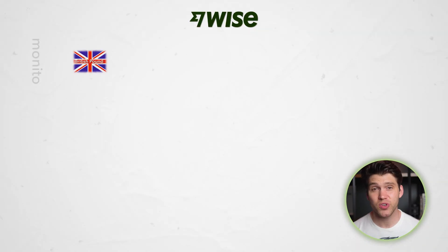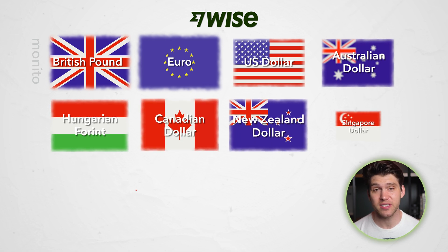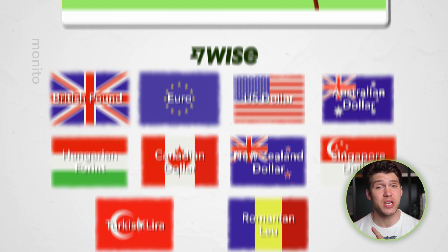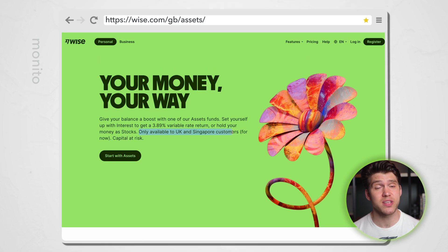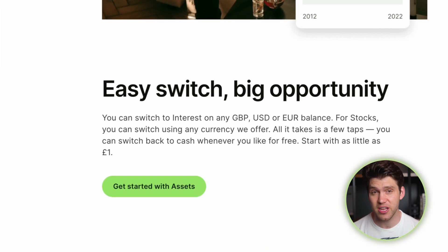Besides being a great way to send money internationally, WISE also gives you access to bank account details in any one of these currencies. Also, depending where you're located in the world, you can even use WISE to invest in stocks and shares and deposit your money into funds that earn interest. Obviously, to access all of this, you'll first need a WISE account, which is where we'll begin in this video.